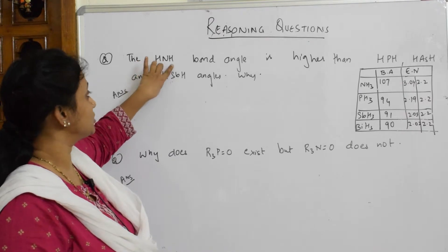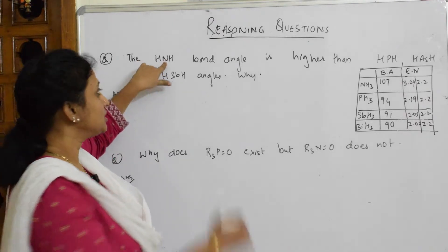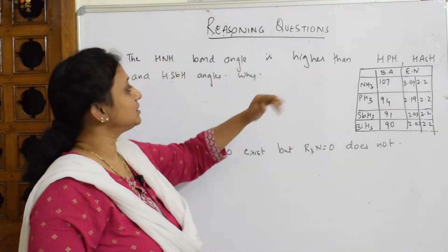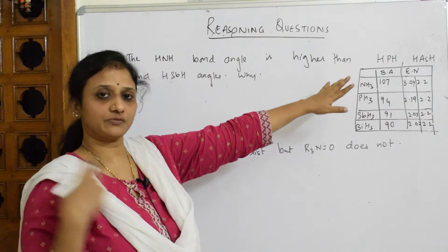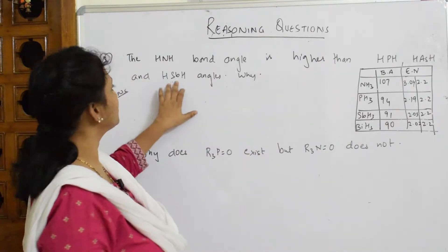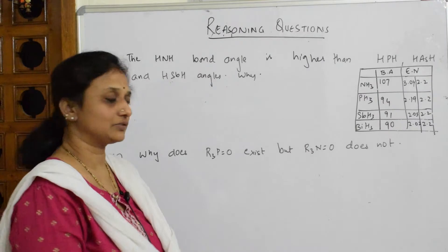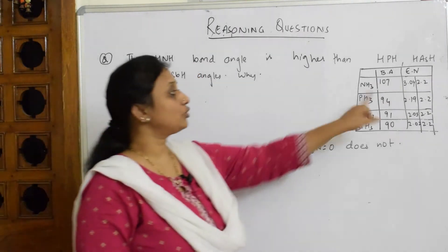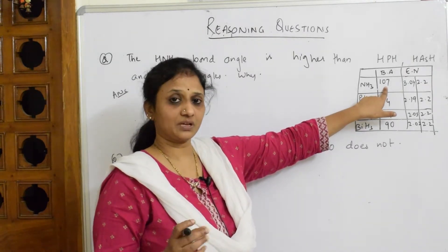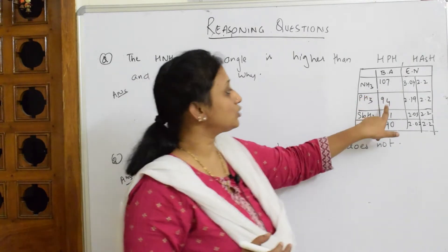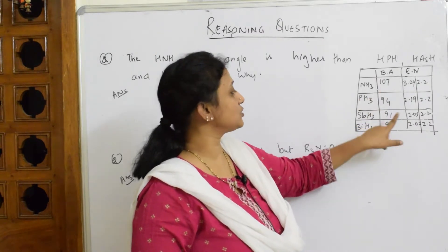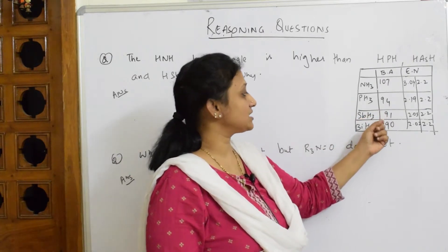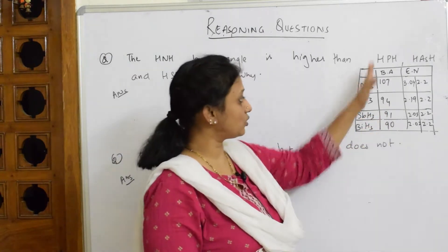Here nitrogen is the central atom, forming bonds with two hydrogens and having a lone pair. The bond angle in ammonia (H-N-H) is higher than H-P-H for phosphorus, H-As-H for arsenic, H-Sb-H for antimony, and H-Bi-H for bismuth. Ammonia has a higher bond angle compared to the remaining hydrides.